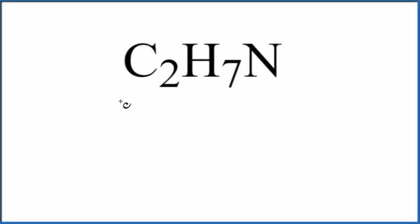Let's draw the Lewis structure for C2H7N, and we're going to assume that this is dimethylamine. Most often with Lewis structures, we put the least electronegative element in the center. In the case of dimethylamine, it's the nitrogen that's in the center.